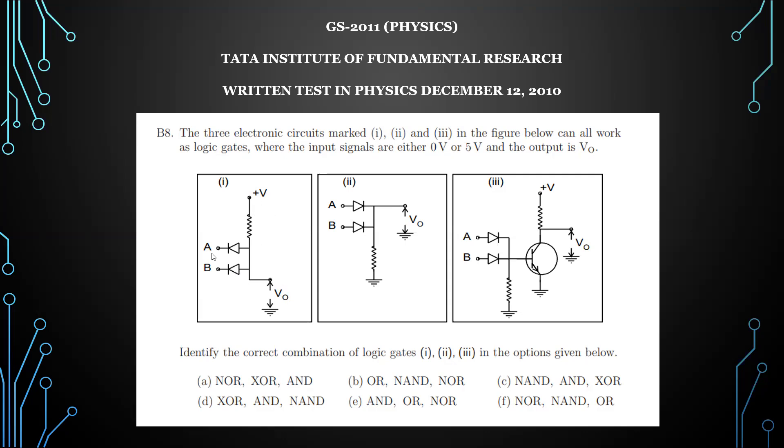When both are high, you get high output. If any one input is low, then this voltage will make the diode forward biased and current will flow through the diode. Here the voltage will be zero because this becomes a short circuit. So this is an example of an AND gate.